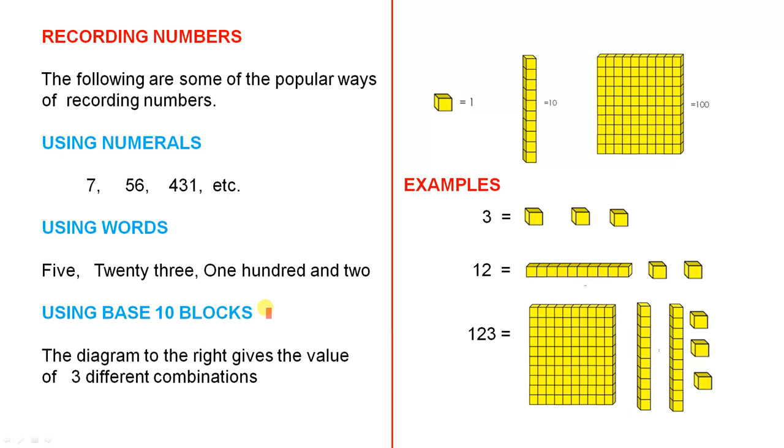You can also use base 10 blocks. The diagram to the right gives the value of three different combinations. This little diagram here, which is like a little cube, stands for 1. Ten of those cubes gives you 10, so when you've got this stick with 10 little cubes, that's 10. This flat shape gives you 100. If you had three of those little ones, that represents the number 3. One of the long ones and two little ones: 10 plus 2 is 12. If you had the flat one, that's 100, those two are 20, and here we have three, so that's 123.